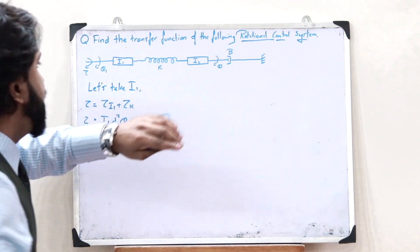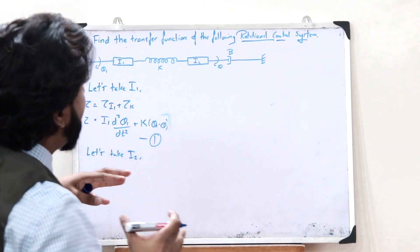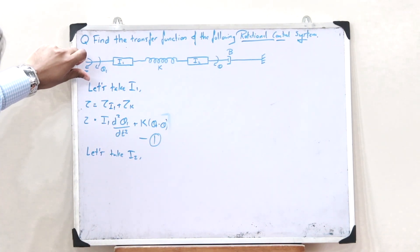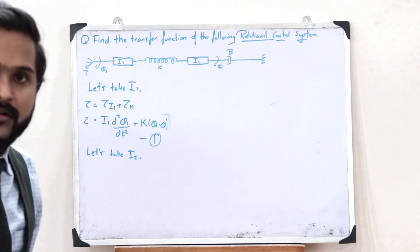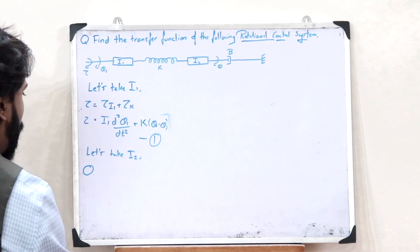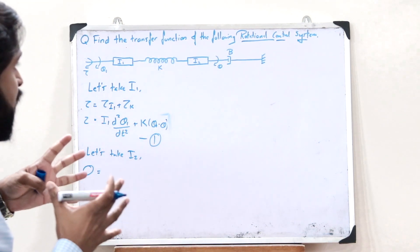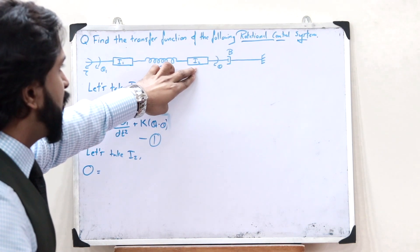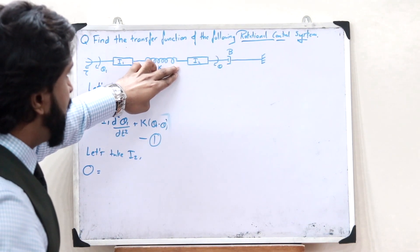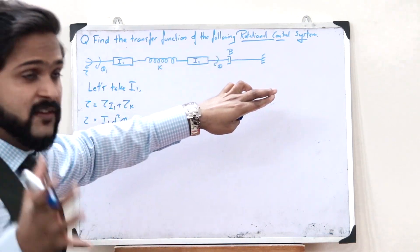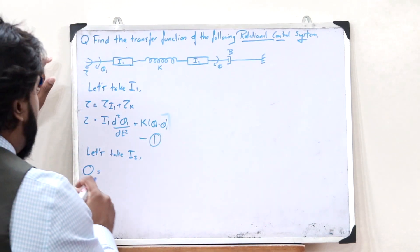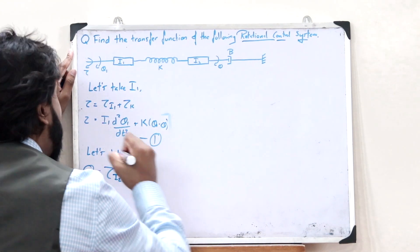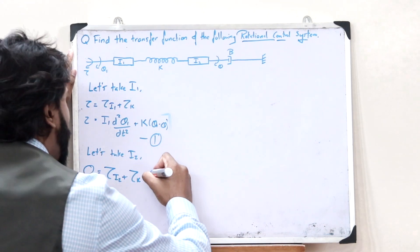Now next let us take the case of I2. In the case of I2, what we observe is that there is no external torque applied on it. Like here we are applying an external torque — here in the case of I2 there is no external torque applied. Therefore the external torque is given as 0. So 0 is equal to the sum of restoring torques: one because of this particular I2, then there is the restoring torque developed in this particular spring, and then there is the restoring torque developed in this particular damper. Therefore this becomes 0 is equal to tau of I2 plus tau K.